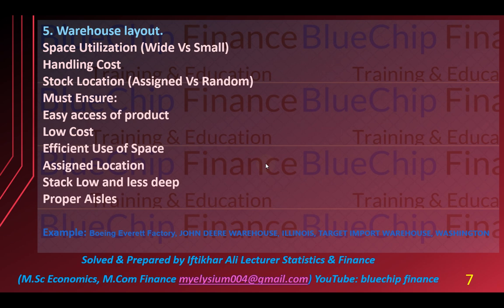Agar aap racking kar rahe hain aur ek doosre ke upar stack karte hain to aap ki space utilization kam hogi lekin handling cost barh'ti jaye gi kyunke zaroorat ke waqt kisi cheez ko bohat upar se ya bohat neeche se nikalna parta hai — aap ka time bhi consume hoga aur handling cost bhi barhe gi. Small space utilization ke andar jo racking hai wo ek doosre ke upar stack karte hain, to stack karne se handling cost aur time consumption barh jati hai.